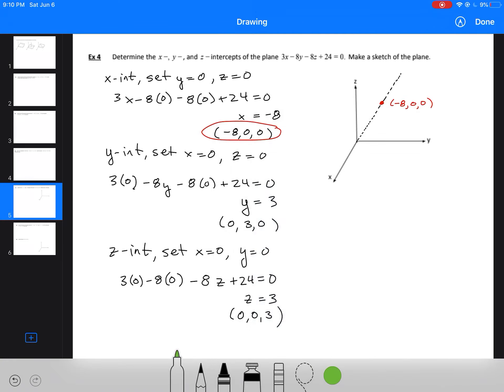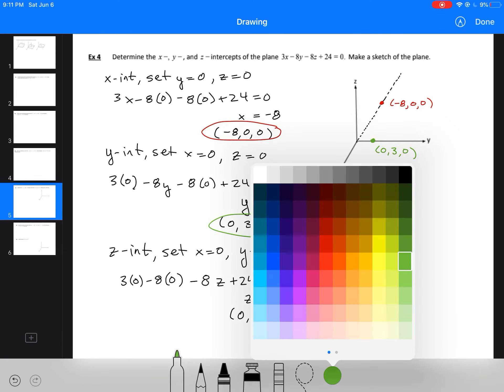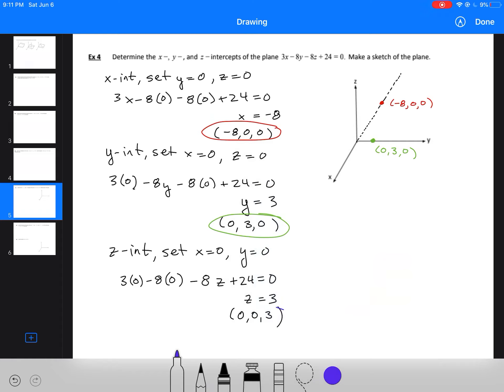Next I'll plot my y-intercept at (0, 3, 0). I'm going to go along my y-axis here, my green point, (0, 3, 0). And finally, my z-intercept at (0, 0, 3).